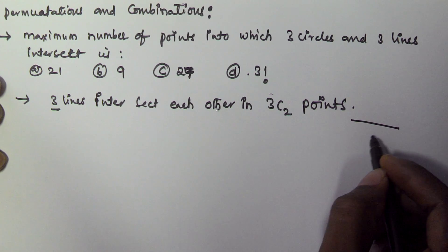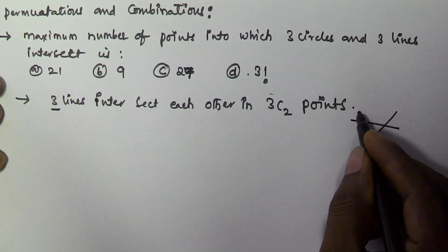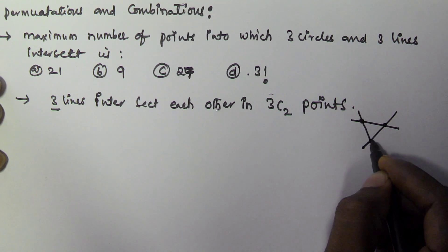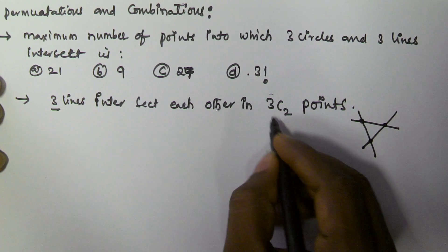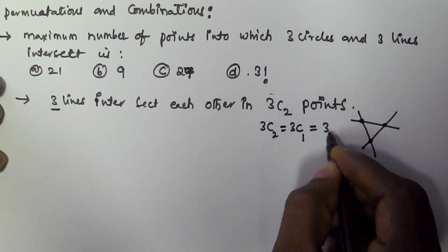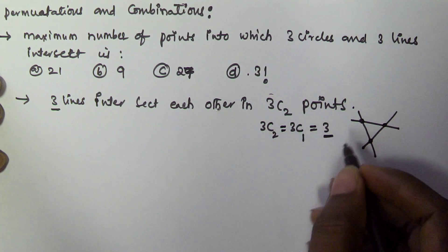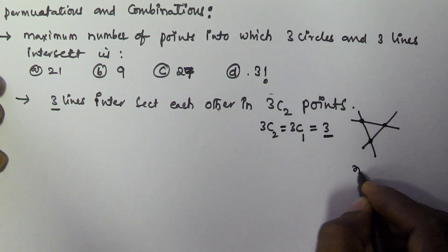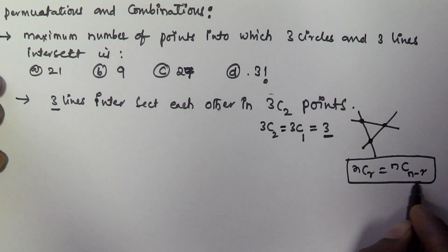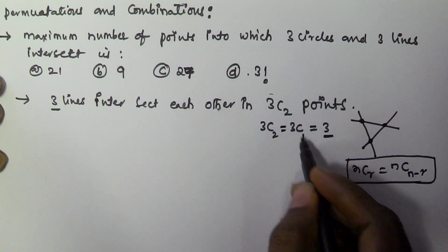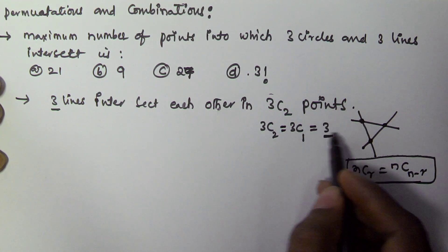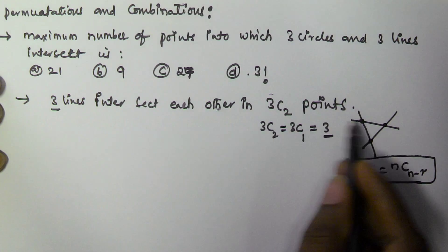This is the first line and they are intersecting each other. There is another line which is intersecting these two. The total number of points is 3. So they are intersecting in 3 points. 3C2 equals 3C1, and 3C1 value is equal to 3. So three lines intersect each other in 3 points.